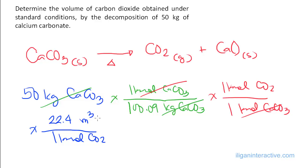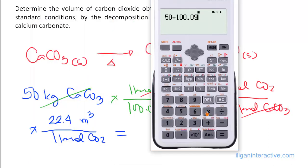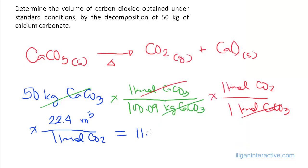With that, we just do the math and get the final answer: 50 divided by 100.09, then multiplied by 22.4, which equals 11.2 cubic meters of CO2.